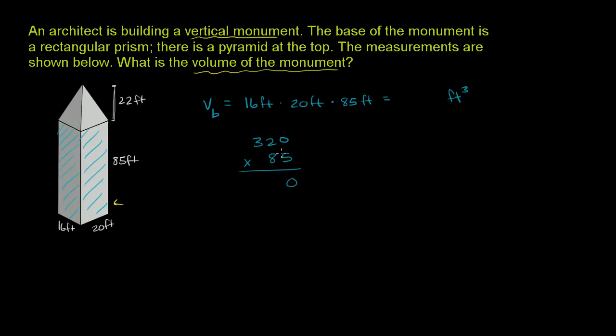5 times 0 is 0. 5 times 2 is 10. 5 times 3 is 15, plus 1 is 16. Now I have to worry about the 8 right over here. Keep a 0 here, because it's really 80.